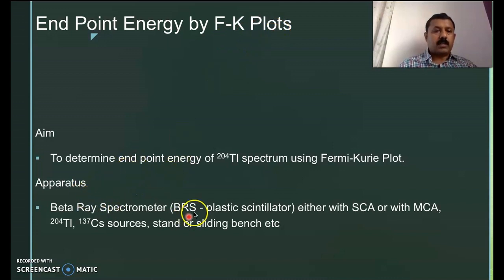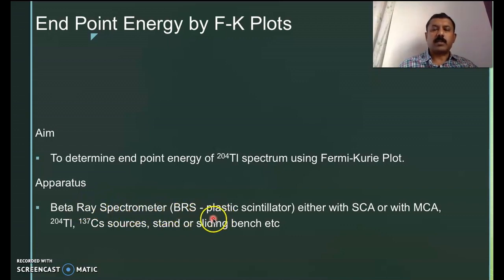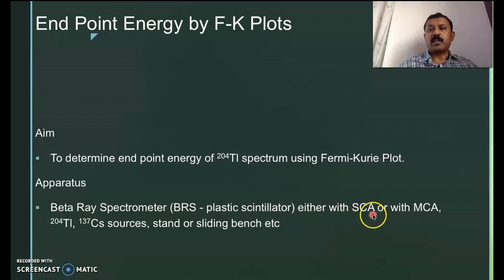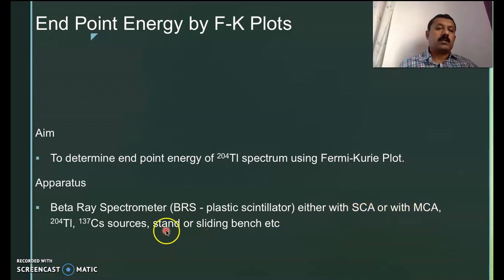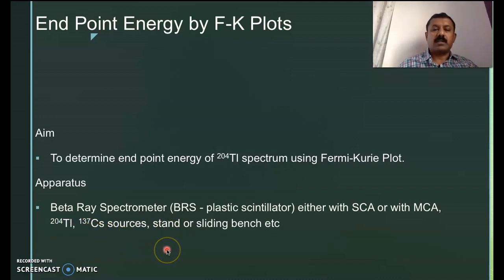These are the apparatus required for this experiment. We require a beta-ray spectrometer, which is connected either with a single channel analyzer or a multi-channel analyzer, beta sources like thallium-204 and cesium-137, a stand or a sliding bench, etc.